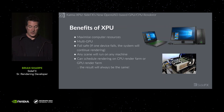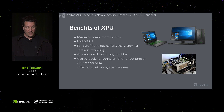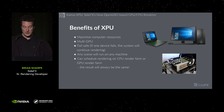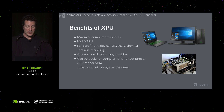So what are the benefits of XPU? Firstly, it makes use of all resources on the computer. It's multi-GPU. It's also fail-safe, meaning that if a device fails — for example, runs out of memory — the other devices automatically pick up the load and finish the frame. Another advantage is that any scene will run on any machine, so if a scene is authored on a high-spec machine, it can still run on a lower-spec machine, even one without a GPU. Rendering can be scheduled on a CPU render farm or a GPU render farm, and the results will always be the same. This gives flexibility to wranglers in large studios.